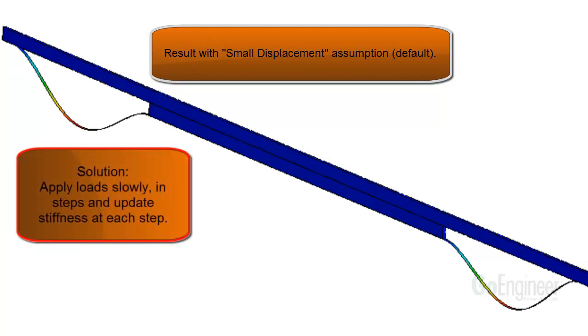The solution is to apply the loads and gravity force slowly in steps and update the structure stiffness at each step. This way, the updated structure stiffness properly accounts for the tensile stresses in the shell elements, so they will provide some resistance to bending.